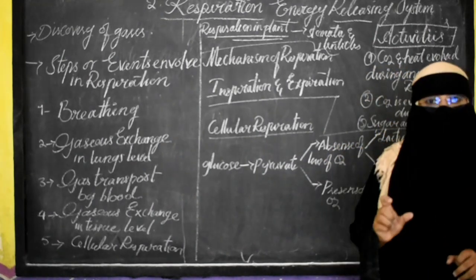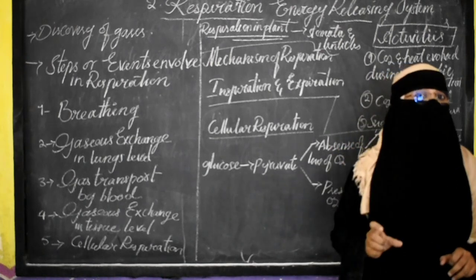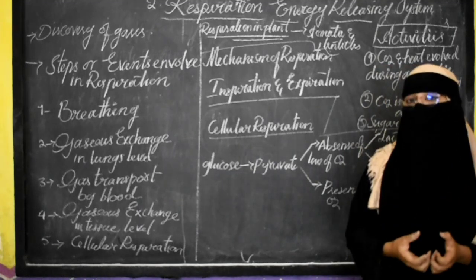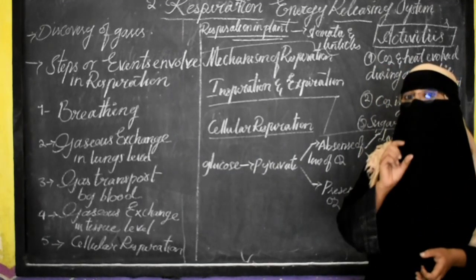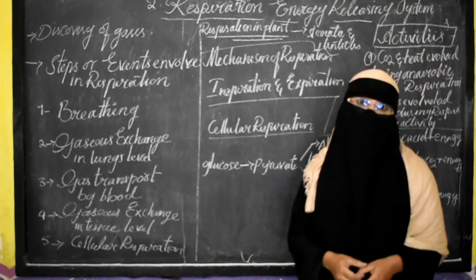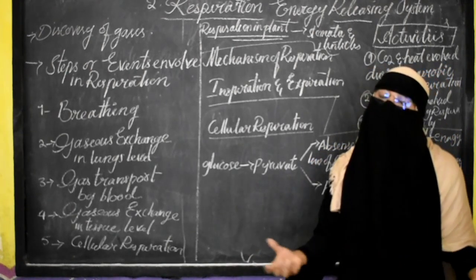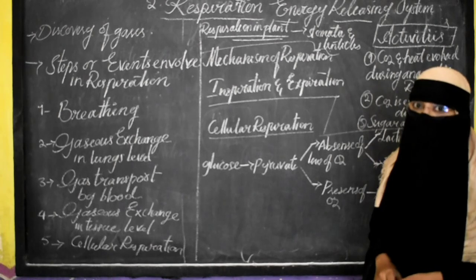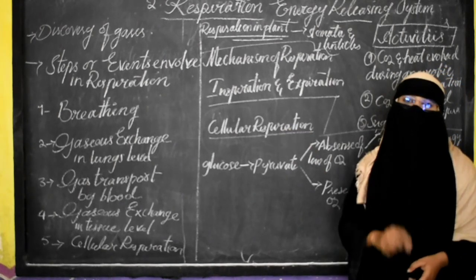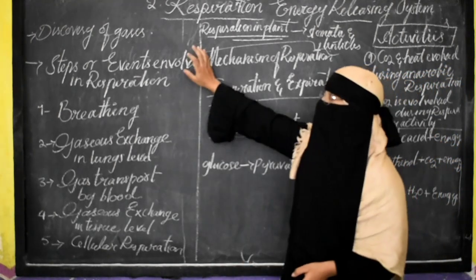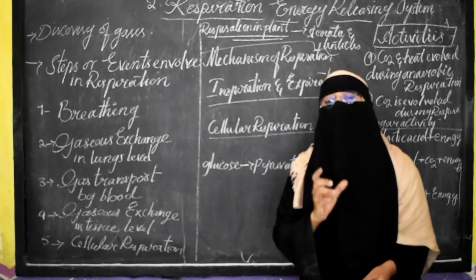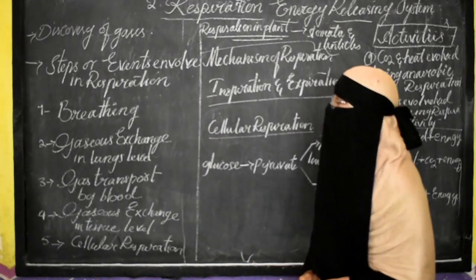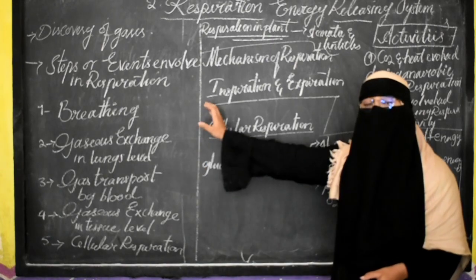We need to know what happens when the combustion of phosphorus is done and what happens when combustion of charcoal is done. Chalky acid is nothing but carbon dioxide; vitiated air is the air in which respirable air is absent; and fixed air is also carbon dioxide. These questions may be asked as one-mark questions, so we need to be aware of the comprehensive work done by Lavoisier and Priestley.